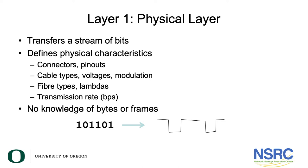At layer one, everything to do with how that series of ones and zeros is transferred is defined. So what kinds of cables, what the connectors are, what pins are active, what voltages are used, and the mechanism used to transfer ones and zeros into the physical representation — that's modulation — and converting them back again to ones and zeros at the other end, which is demodulation. If you're talking about fibre optics you'll also be talking about what kinds of fibre, what the wavelengths, the lambdas, are.